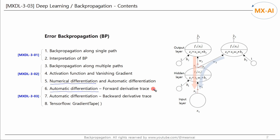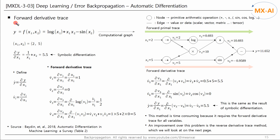There are two methods of automatic differentiation. The first method is forward derivative trace, and the second method is backward derivative trace. The second method is used to train a neural network. First, let's look at the forward derivative trace method.